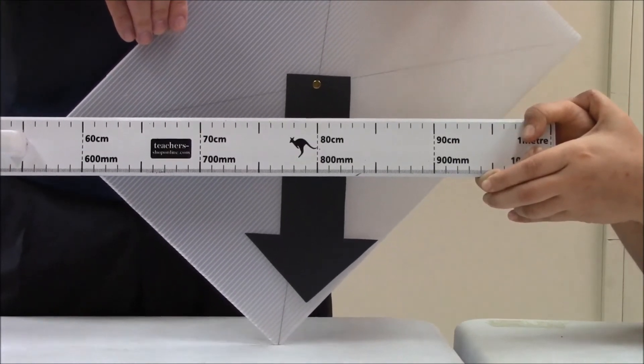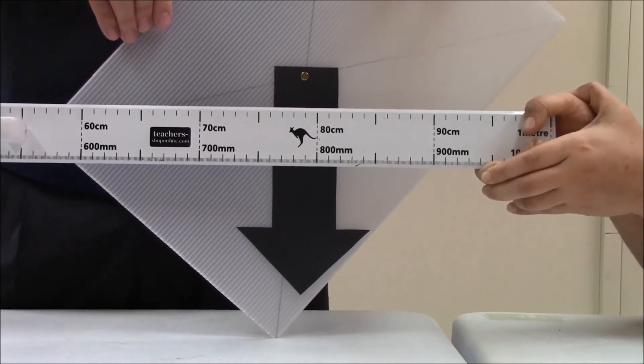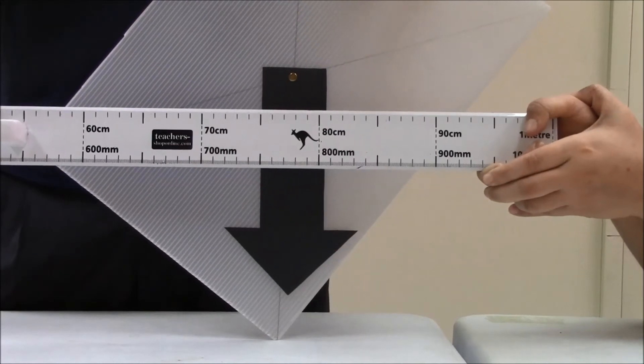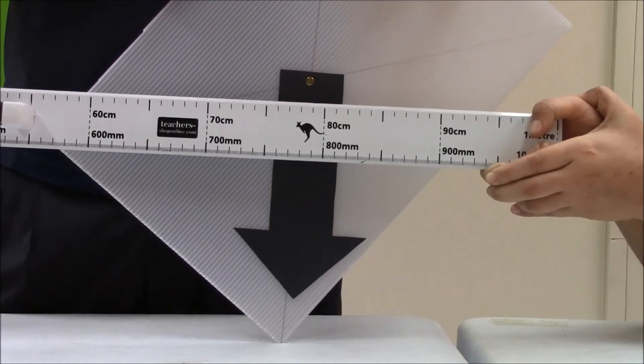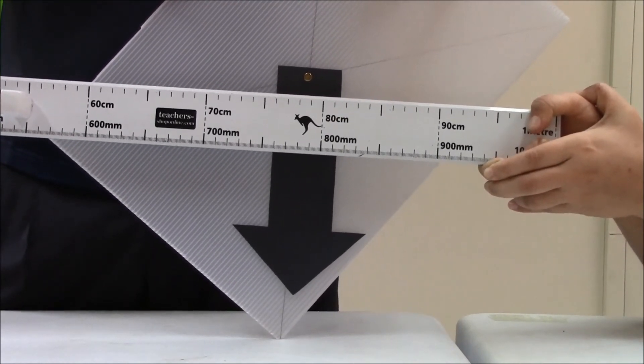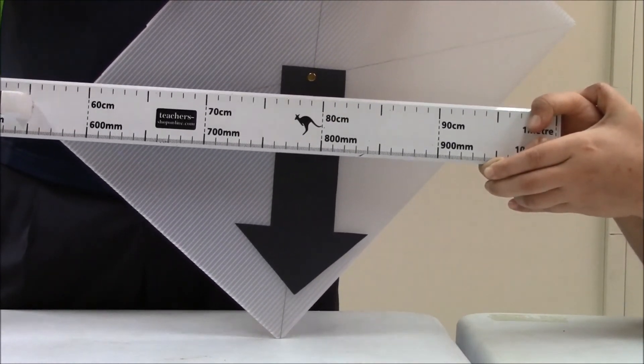So we can draw a conclusion here that the higher the center of gravity, the less stable the board will become or the more likely the board will topple.